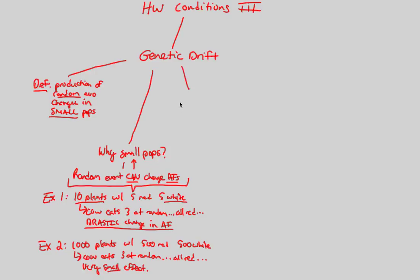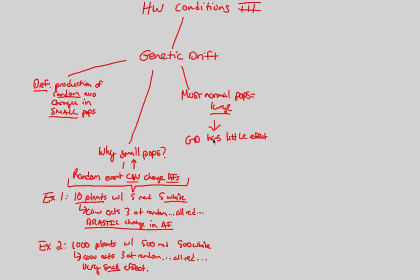In reality, most normal populations — most populations in nature — are relatively large, and thus genetic drift has little to no effect on most populations. There are examples in your textbook of real-life genetic drift having an effect on a population, but in most cases, just like in this Hardy-Weinberg scenario, genetic drift has very little effect. There are two types of genetic drift to understand — be familiar with their definitions.